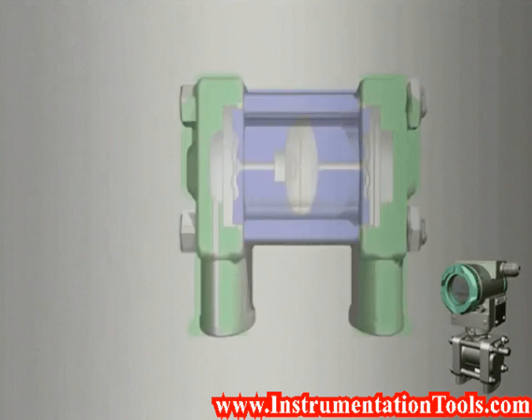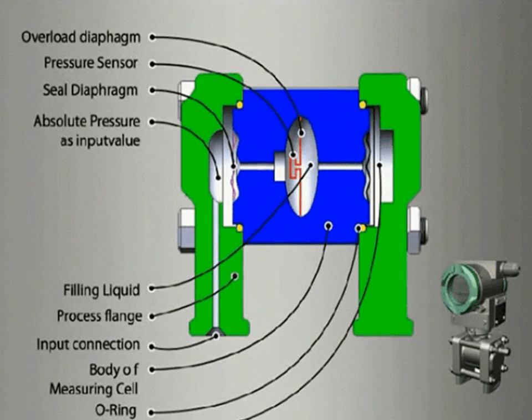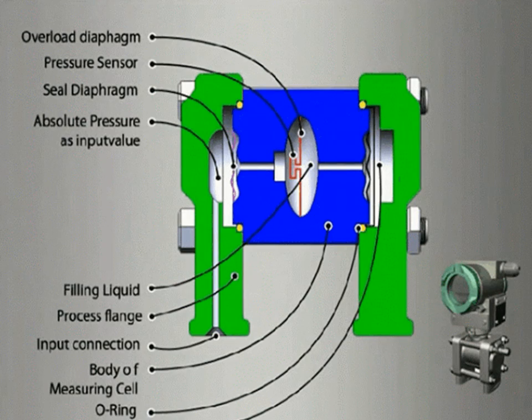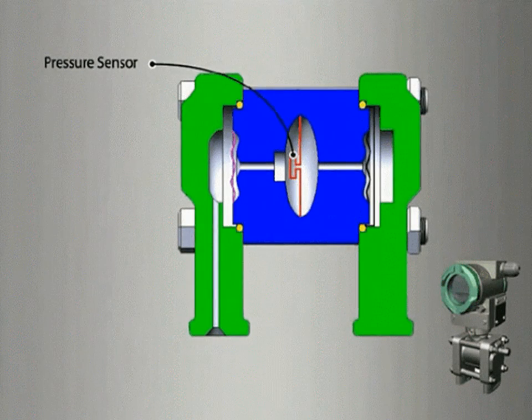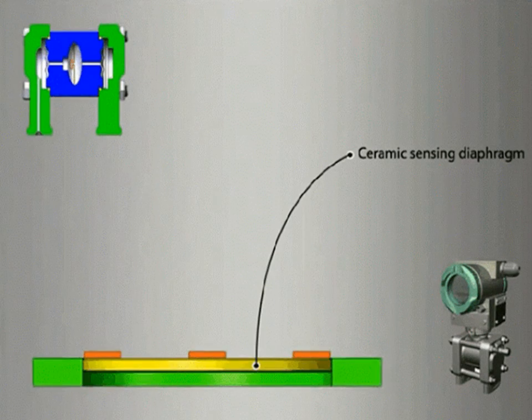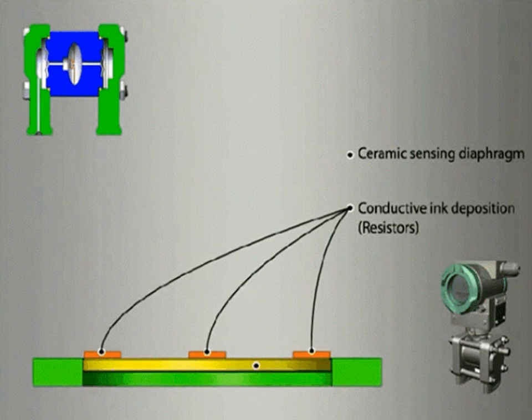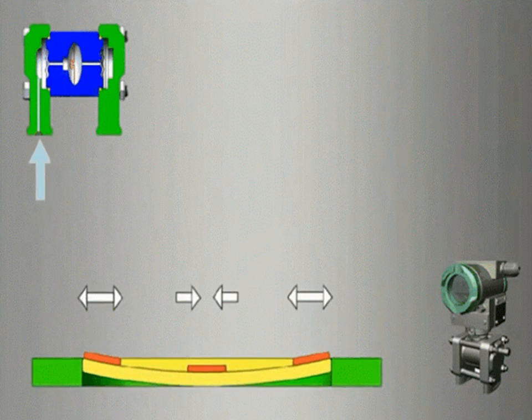When we apply pressure to the pressure transmitter, the applied pressure acts as a force on the diaphragm inside the pressure transmitter. Then the diaphragm either expands or compresses depending on the applied pressure.